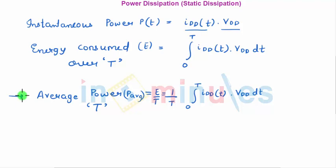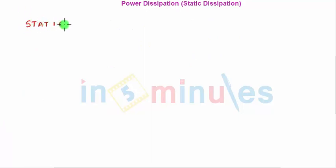We have simply written instantaneous power, derived energy consumed over time interval T, and from that found average power over interval T. Now there are two different types of power dissipation in MOSFETs: static power dissipation and dynamic power dissipation.